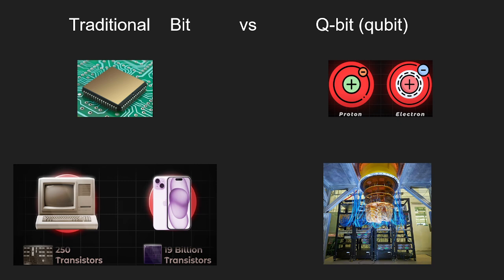The physical representation of the traditional bit is called a transistor, which can either be on or off. The more transistors and chips we have, the more binary information we can process. Because of mass production, transistors and chips became smaller and smaller as the technology developed. For example, an iPhone chip can have a size of 3 nanometers.